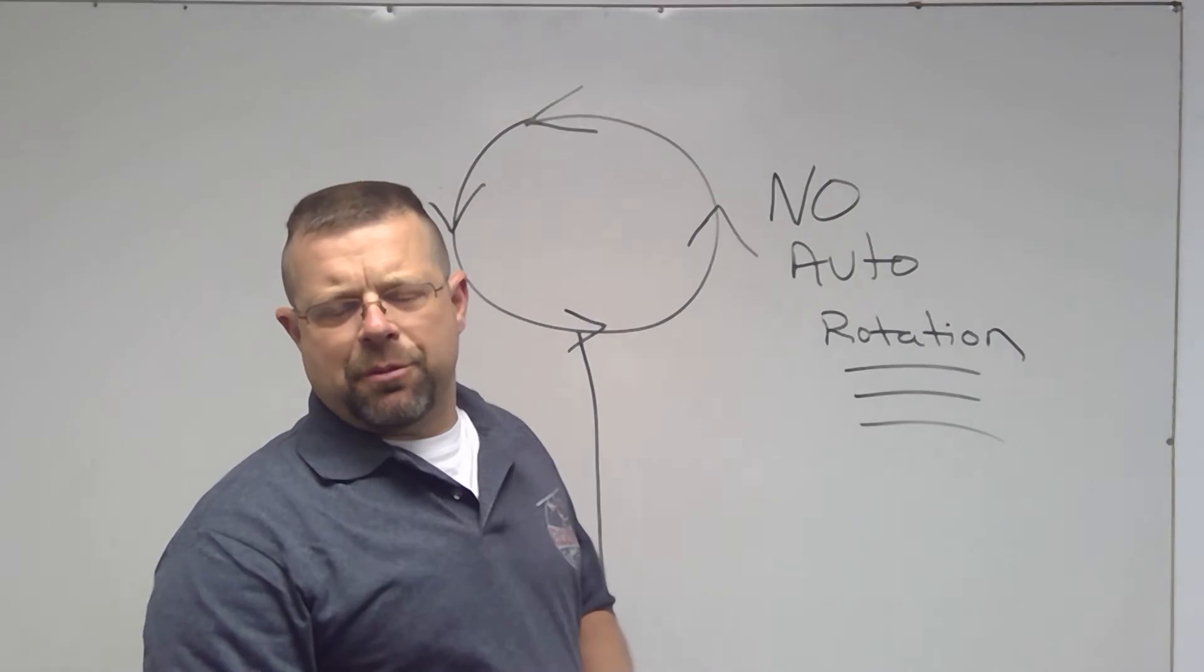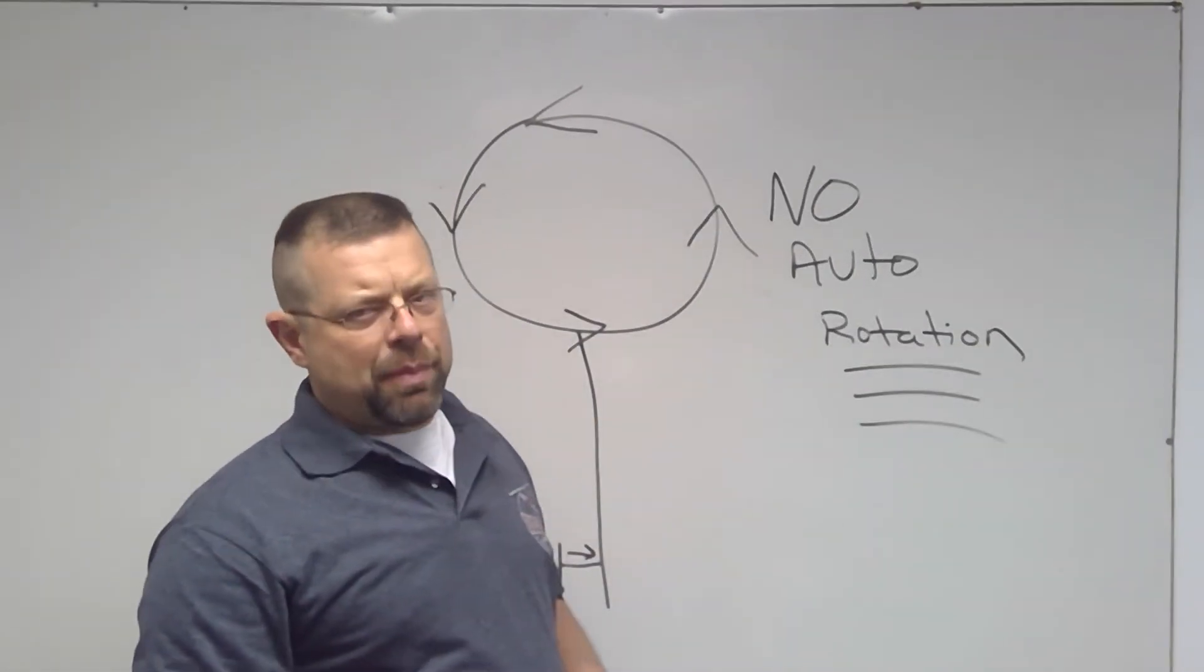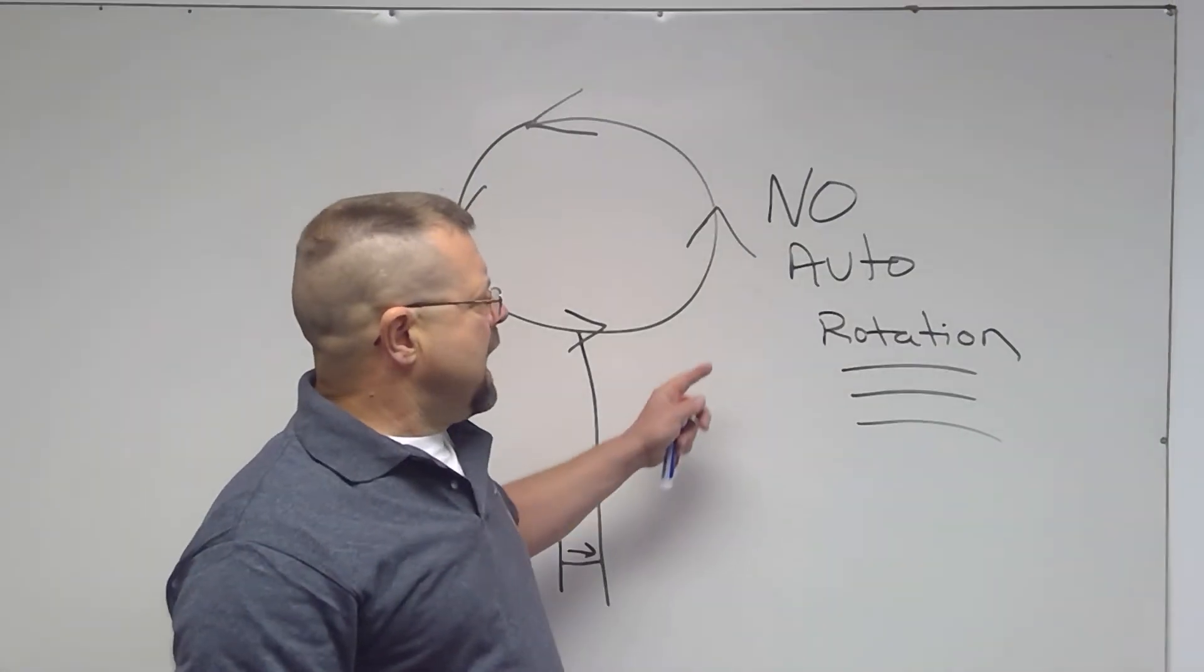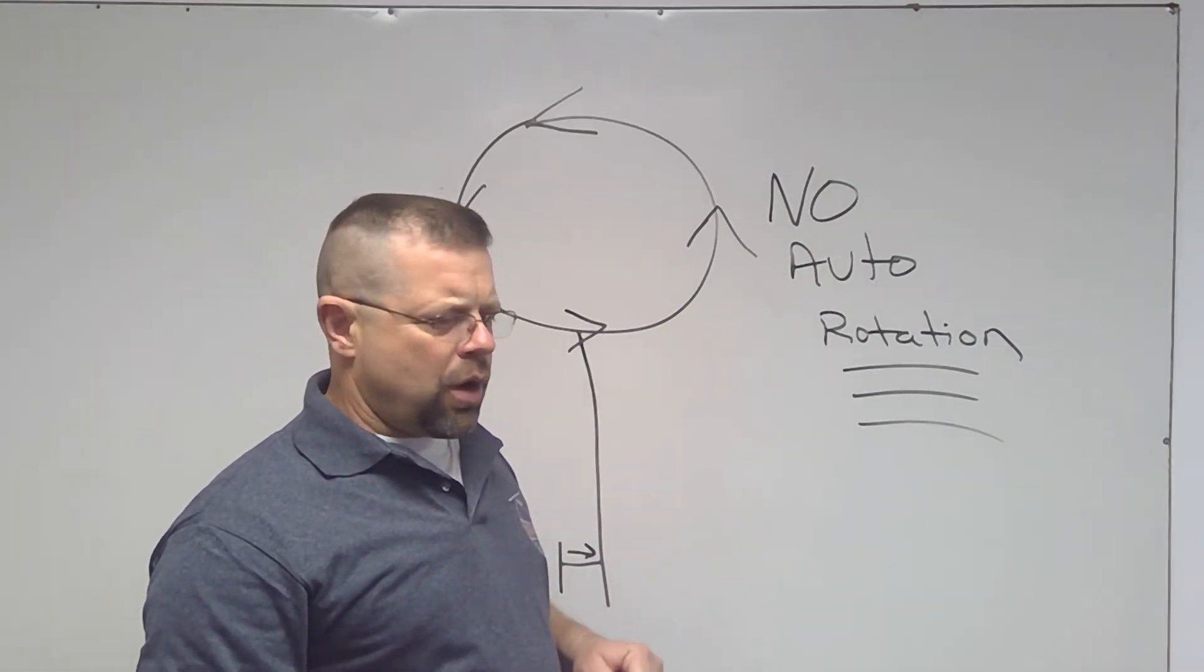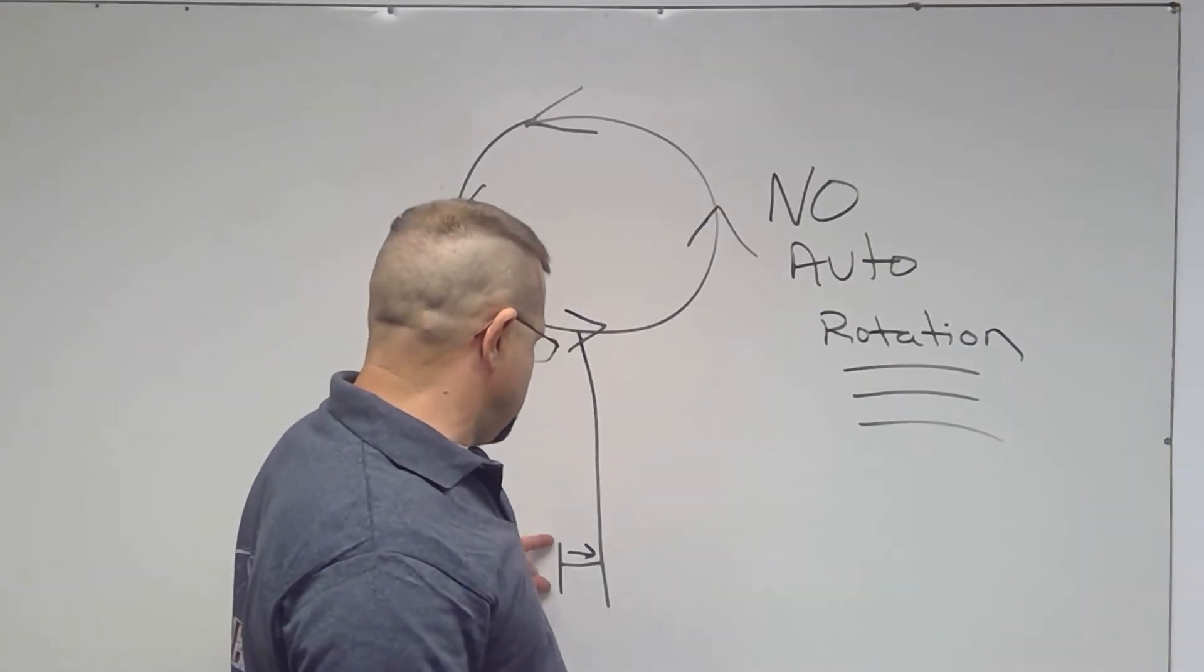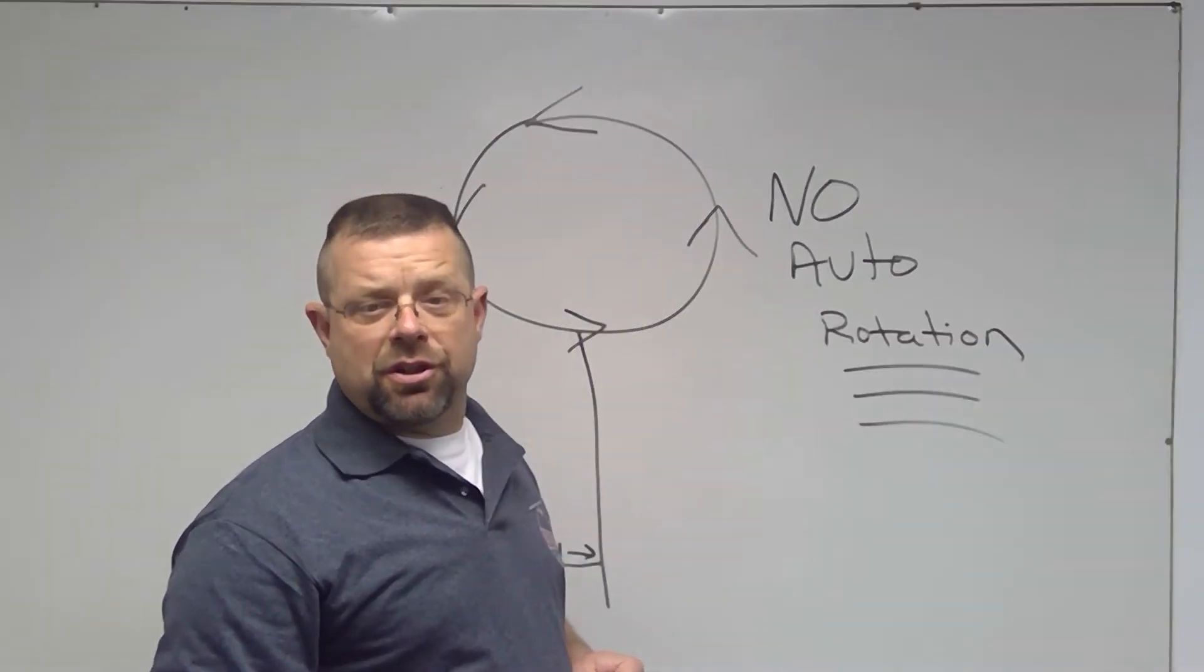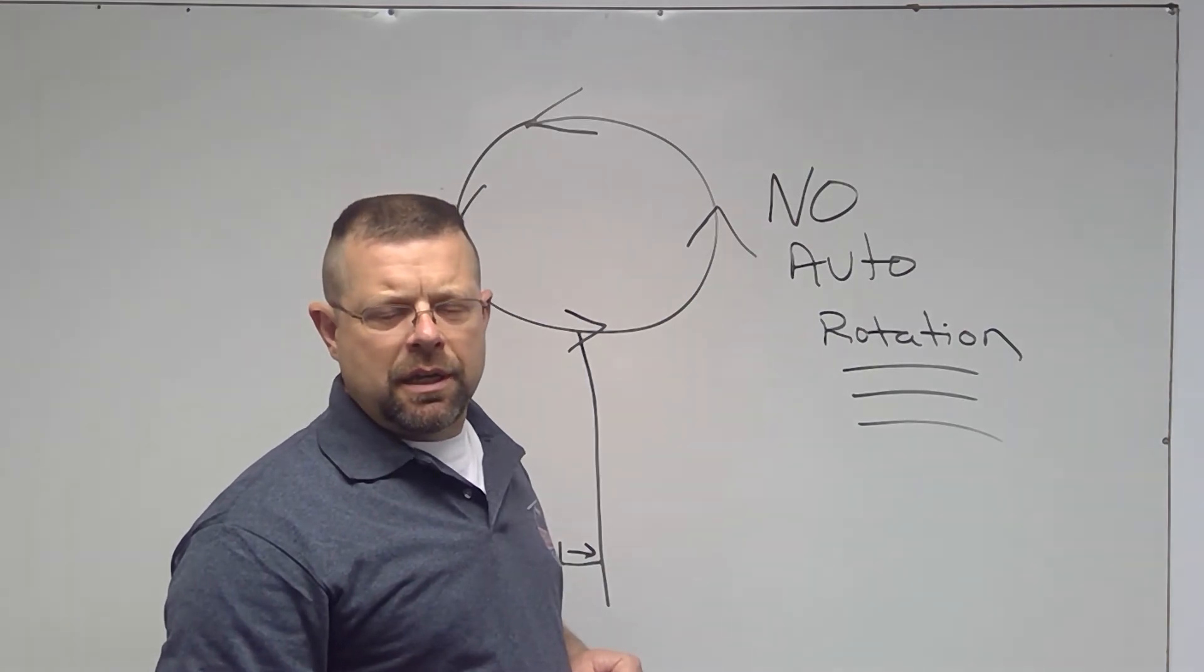When you go to your check ride and the examiner asks you about this type of emergency, stuck pedal, do not tell him you will be doing an auto rotation. You can fail your check ride, and it won't work. When you get rid of all that torque to enter an auto rotation, if you have pitch stuck in this tail rotor, then you will not be able to get rid of the pitch in the tail rotor and you will have a yaw in the auto rotation.